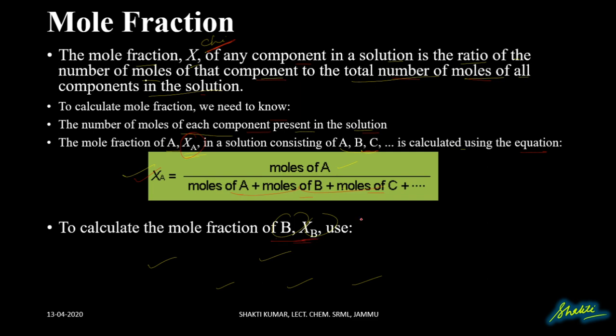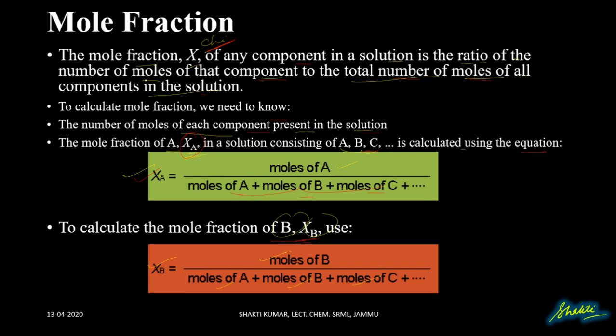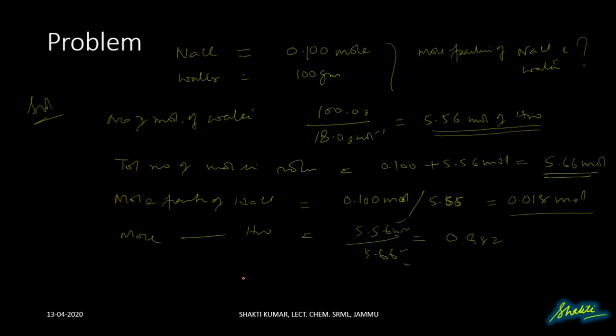Similarly, chi B is written as moles of B divided by the sum of moles of A, B, and C.